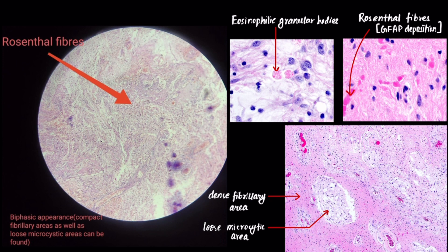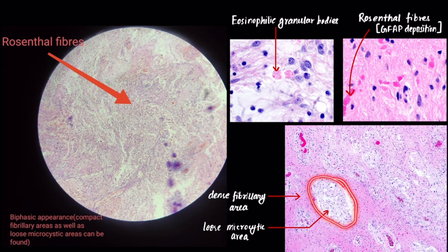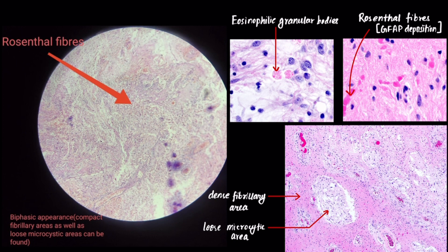If you look at the tumor under a microscope, there are areas that are dense, called dense fibrillary areas because they are rich in fibrillary matter, and areas that are loose, called loose microcytic areas. There are also eosinophilic granular bodies. So the three major microscopic features of pilocytic astrocytoma are: number one, dense fibrillary areas along with loose microcytic areas; number two, presence of GFAP deposition forming Rosenthal fibers; and number three, eosinophilic granular bodies. If there are Rosenthal fibers, it is pilocytic astrocytoma.